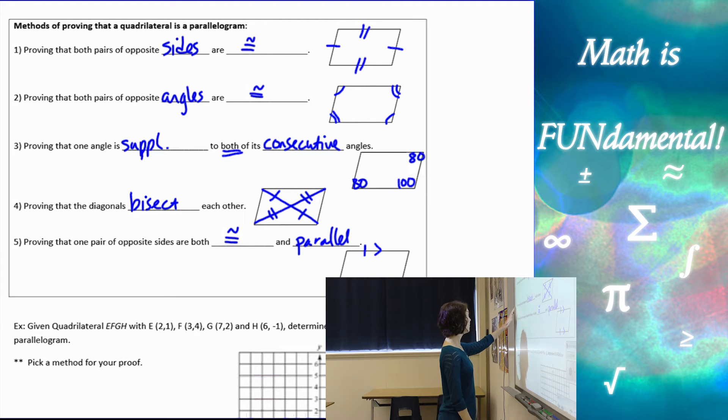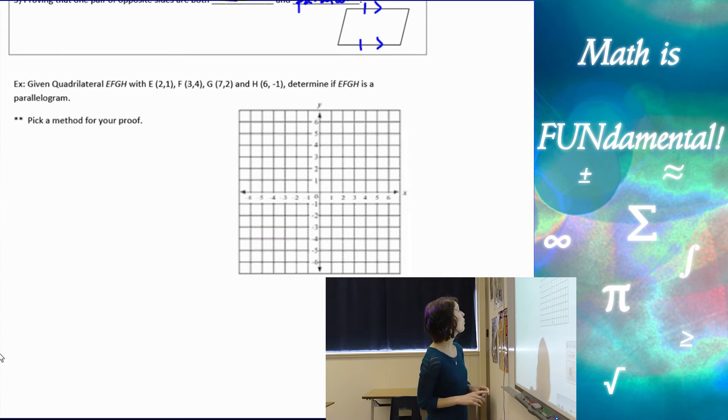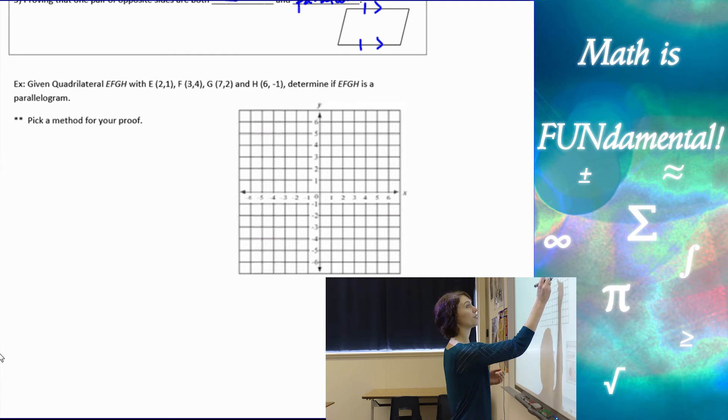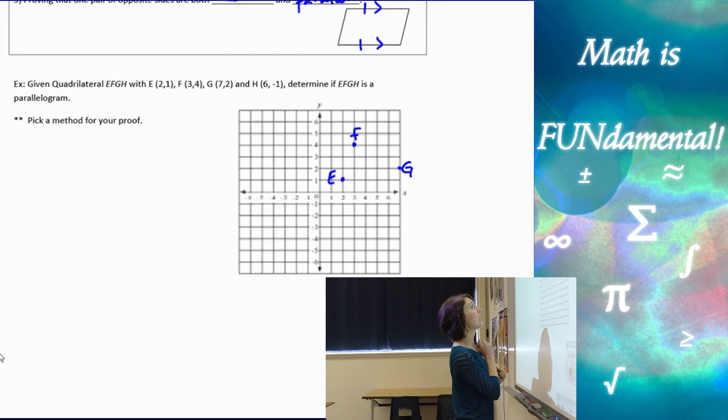Let's go down to this example and see how this all works. Given quadrilateral EFGH with coordinates, let's graph these. We have E at (2,1), F at (3,4), G at (7,2), and H at (6,-1). Here is my quadrilateral, and I want to prove that this is a parallelogram.